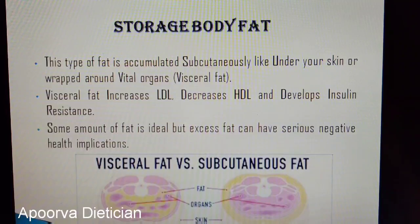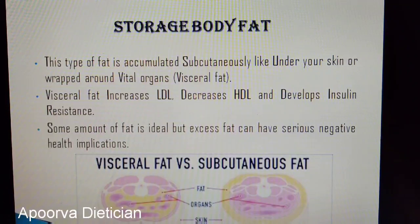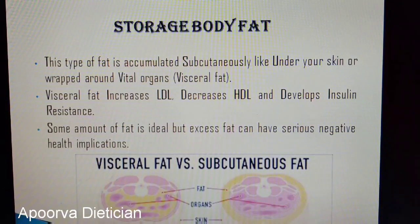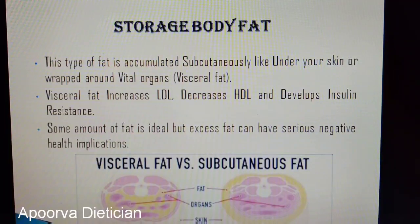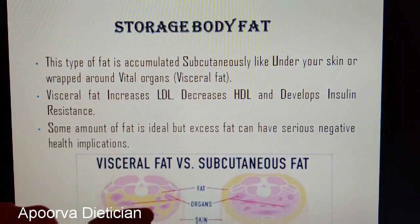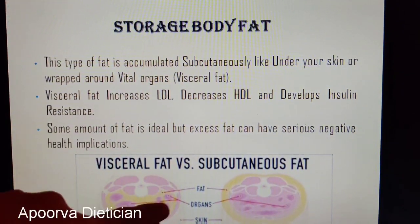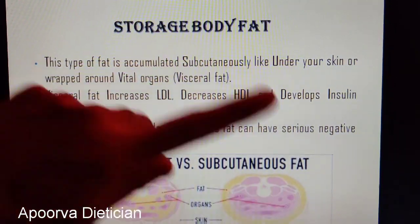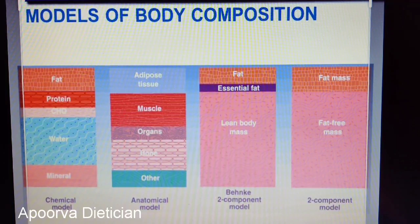Storage body fat is the second type of fat, and it accumulates either subcutaneously — that is, under your skin — or it is wrapped around your vital organs, which is called visceral fat. Excess visceral fat results in negative health implications: it increases LDL (bad cholesterol), decreases HDL (good cholesterol), and develops insulin resistance. You can observe here that subcutaneous fat is under your skin, whereas visceral fat is between and wrapped around the organs, making it more dangerous than subcutaneous fat.